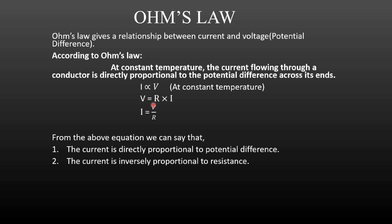We can write V is equal to R into I, where R is the proportionality constant. We can also write I is equal to V upon R. So current is directly proportional to the potential difference and inversely proportional to the resistance. This is the story about Ohm's Law.